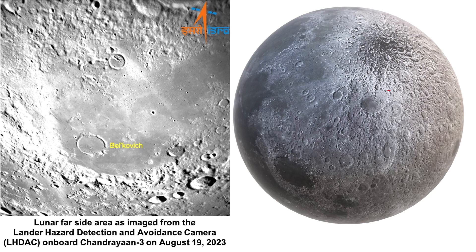The satellite crater Belkovich K lies on the north-eastern rim. The outer rim, once circular, has been shaped into a range of mountains and hills. This is where the crater is located on the moon.